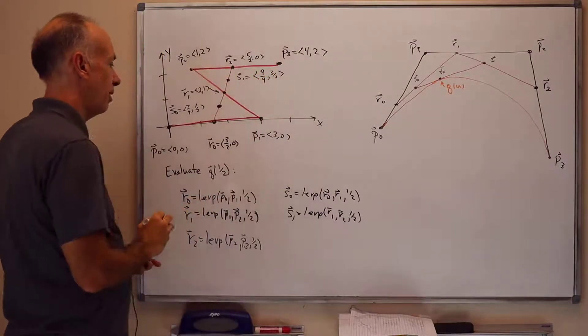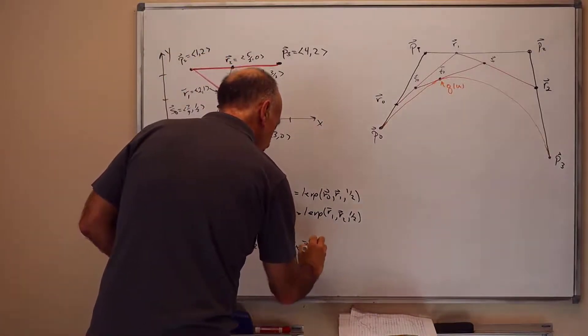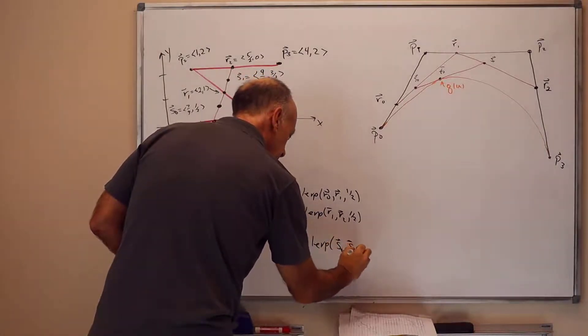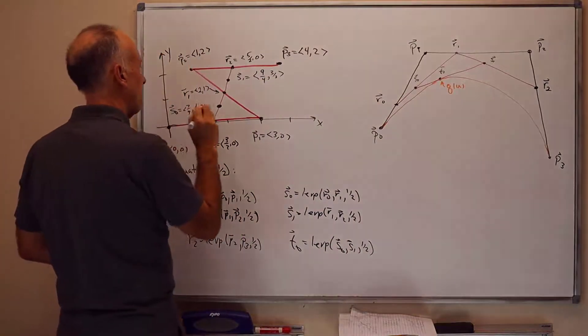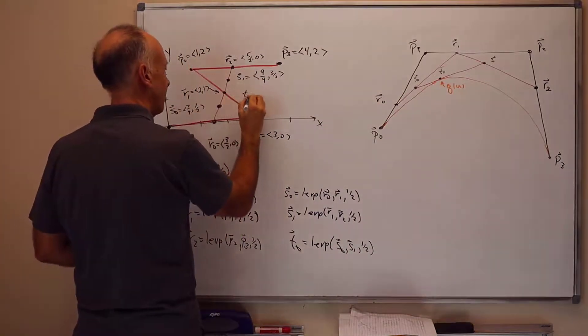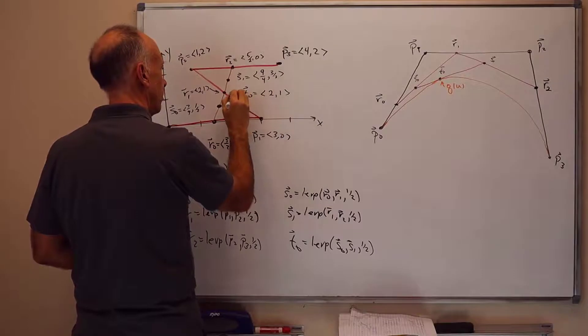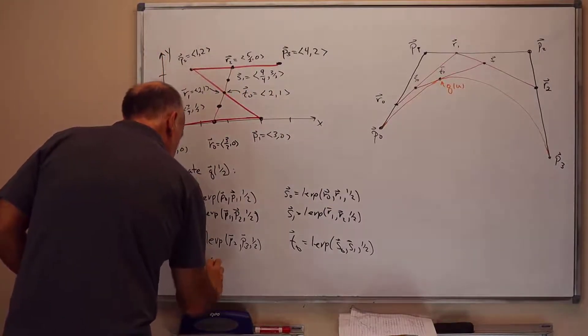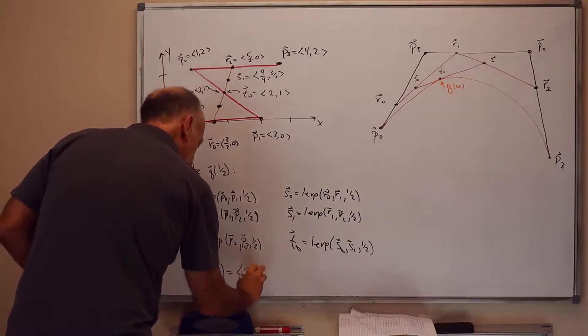And finally, T0 is the midpoint between S0 and S1, lerp S0, S1, 1 half. And so T0 actually turns out to be the same thing as R1. So Q of 1 half equals (2, 1).